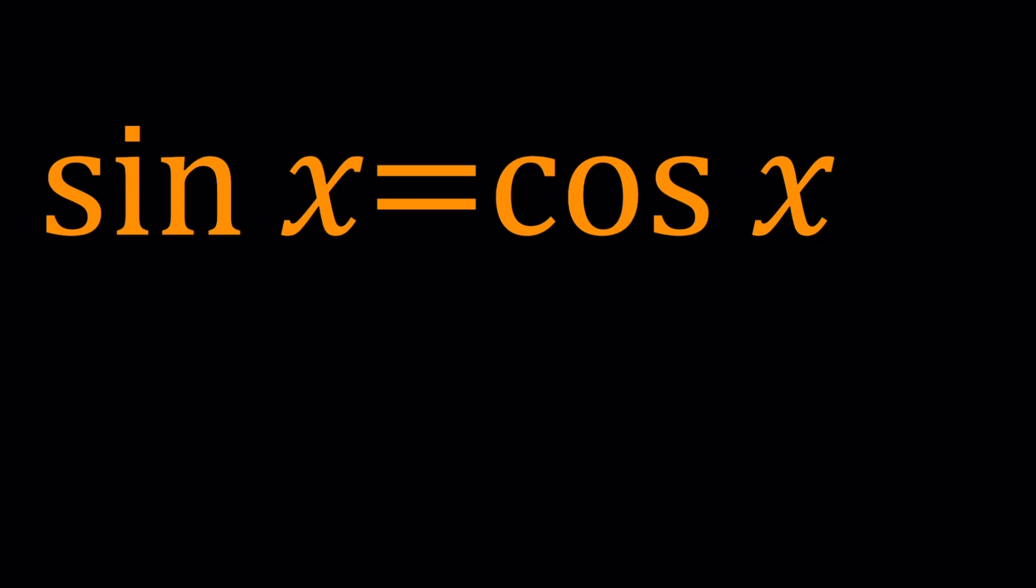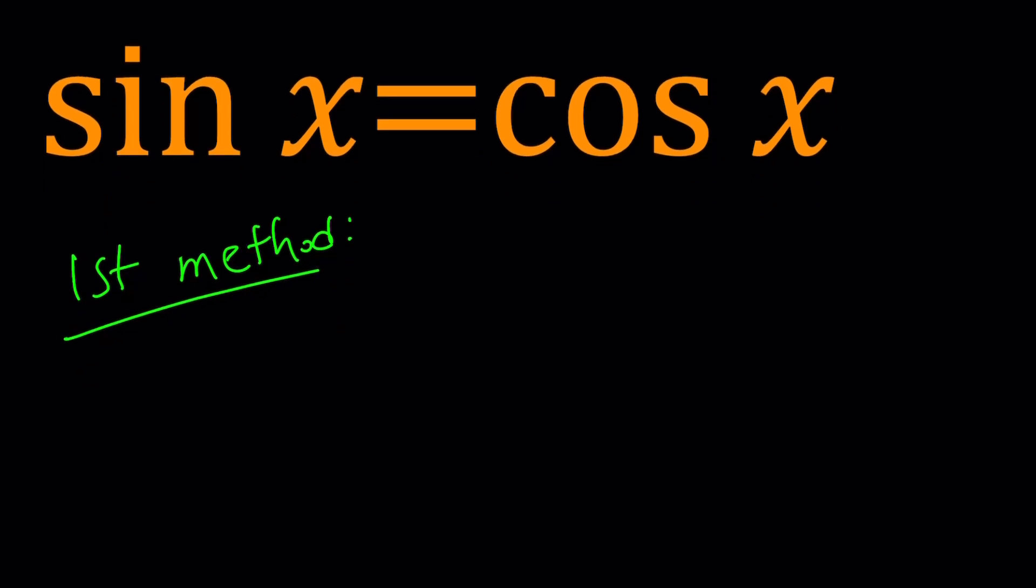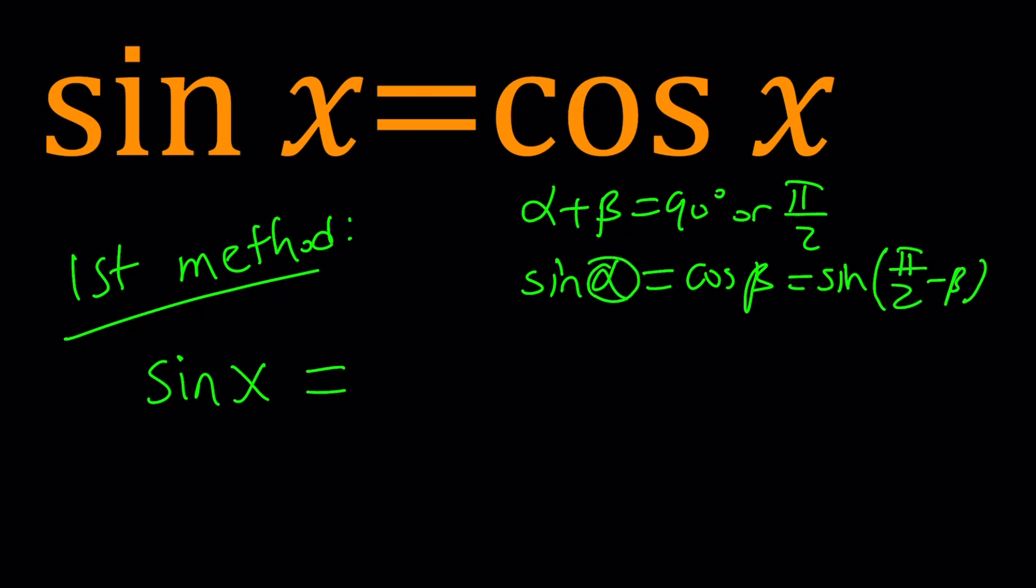So my first method is: when I have something like sin x equals cos x, one of the things I can do is turn cosine into sine using the complement. If alpha plus beta is 90 degrees or π/2 radians, then we can safely say that sin α is the same as cos β. You can replace cos β with sin(π/2 - β). So I'm going to turn the cosine into sin(π/2 - x).